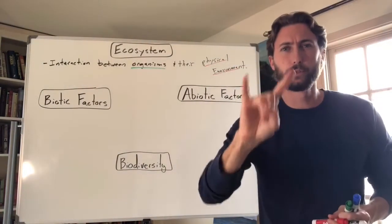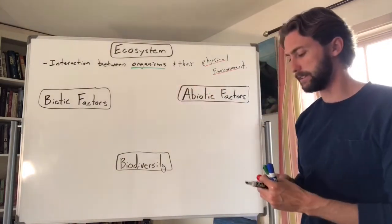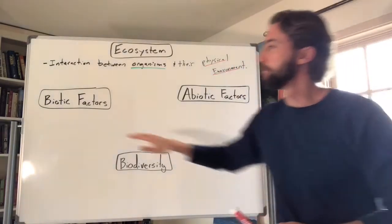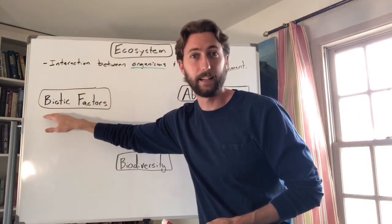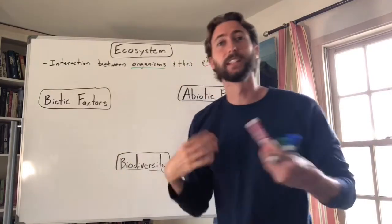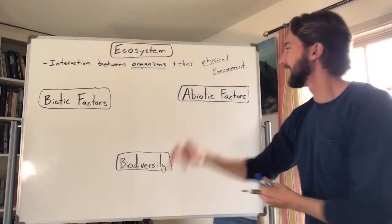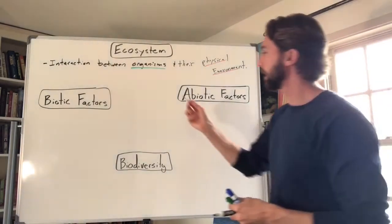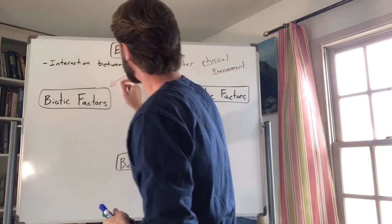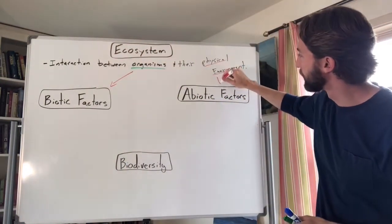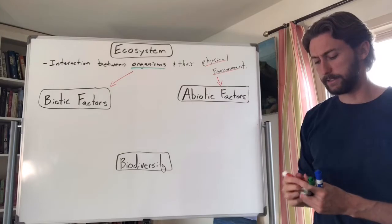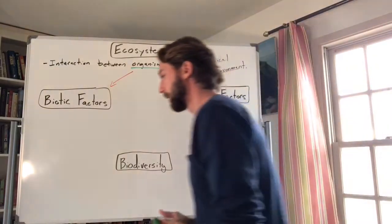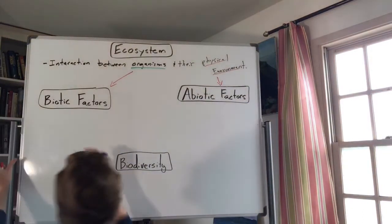Two new vocab words to be more specific: biotic factors and abiotic factors. 'Bio' means life — so biology is the study of life. Biotic factors are the living things in an ecosystem, and abiotic factors are the opposite — the non-living things in an ecosystem.